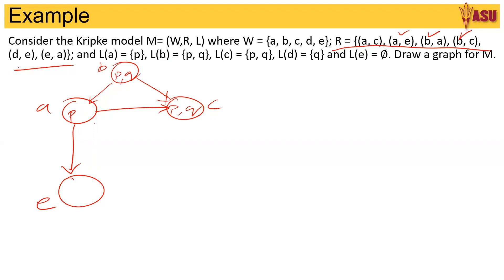Then we have there is another state D which goes to E. What's the language of D? It has the letter Q and finally we have E goes to A. We have captured the states, the entire world and the language of all the states. This is how we draw the graph for a given model.